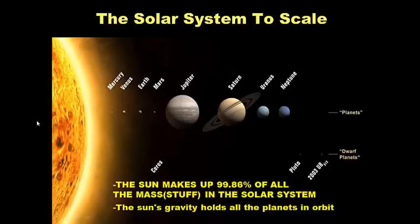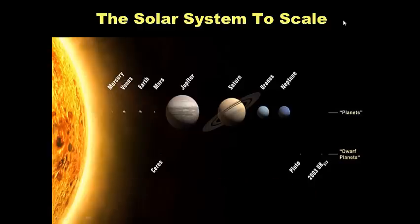The solar system to scale: if we put all the planets close together, you can see the size of the Sun compared to Mercury, Venus, Earth, Mars, Jupiter, Saturn, Uranus, and Neptune. The Sun is massive — it makes up 99.86% of all the mass in our solar system. Most of the mass is the Sun, and the Sun's gravity holds all the planets in orbit.